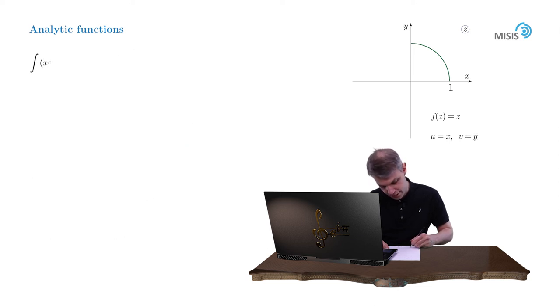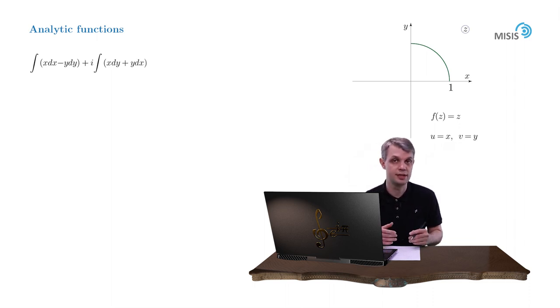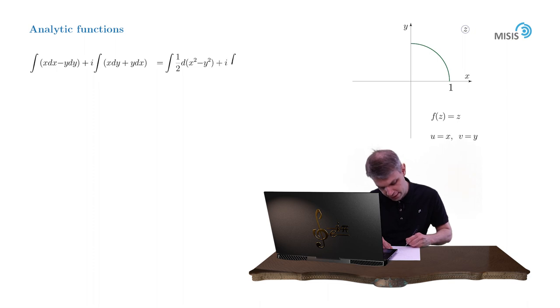is x dx minus y dy plus i x dy plus y dx. Both of these integrals can be naturally organized into full differentials. The first one is one half of d of x squared minus y squared, while the second one is the integral of d of xy. And then combining them into a single integral sign, we obtain one half of d of x squared minus y squared plus 2xyi, which is of course nothing but dz squared.